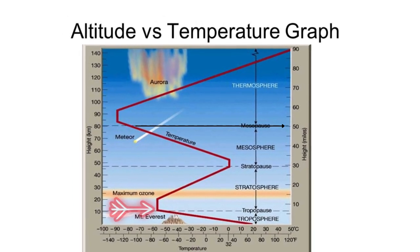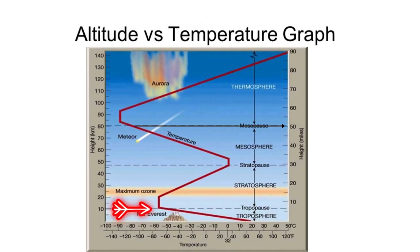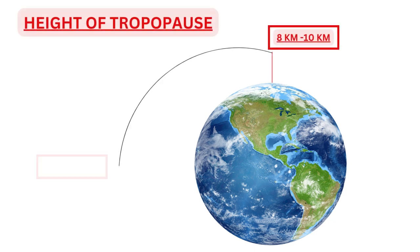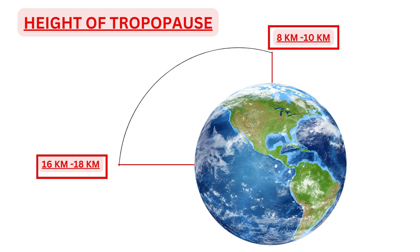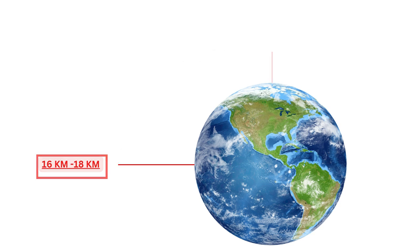Tropopause is the top of troposphere where the reduction of temperature with height stops. The height of tropopause is 16 to 18 km over the equator and 8 to 10 km over the poles. The height of tropopause over the equator is higher because the equator is warmer compared to the poles. Equator receives more solar radiation, so air rises to a greater height, reducing temperature due to expansion cooling.